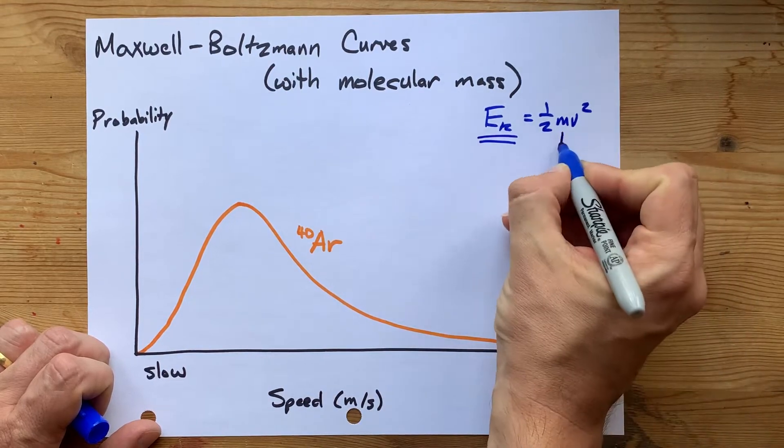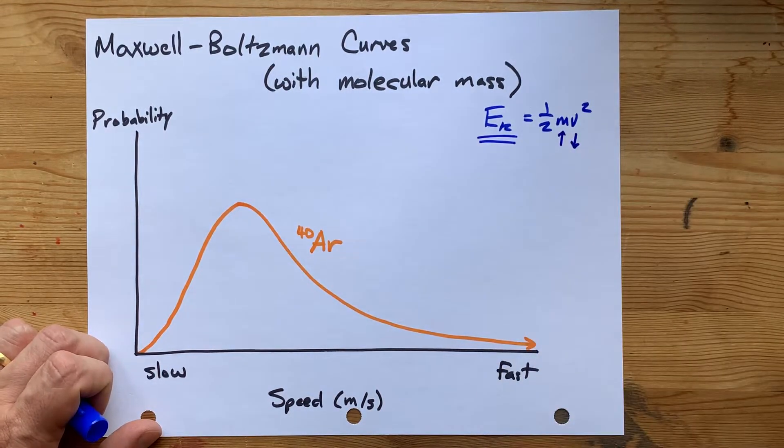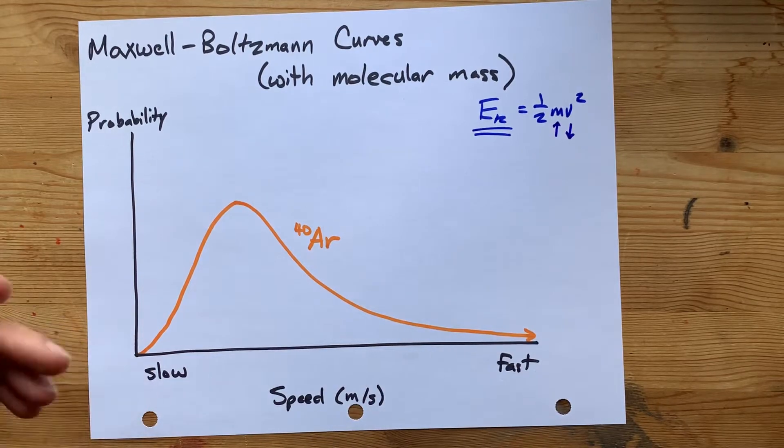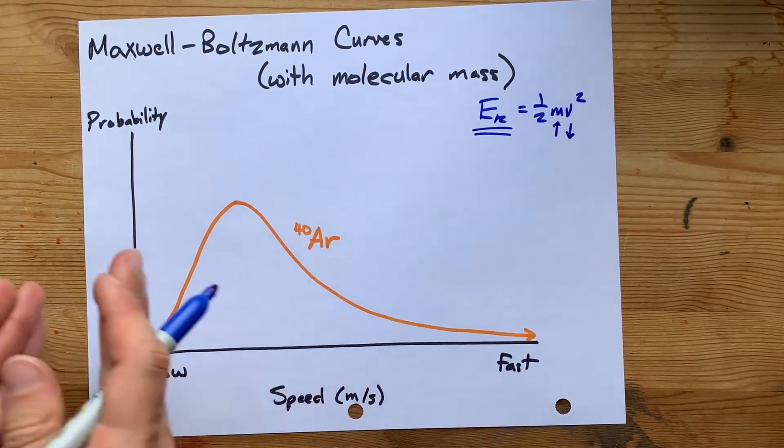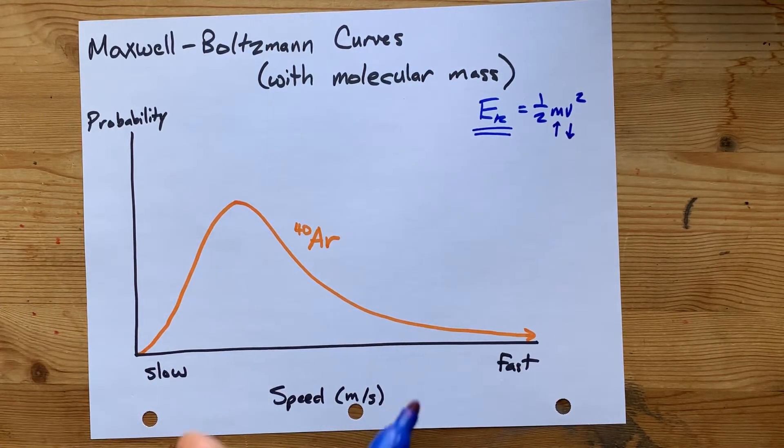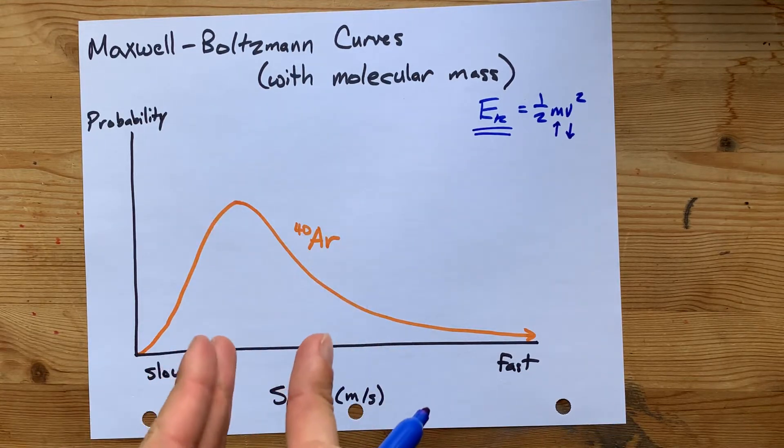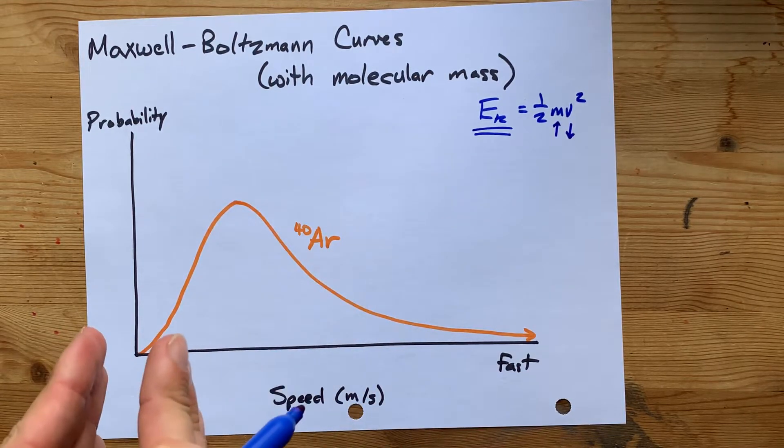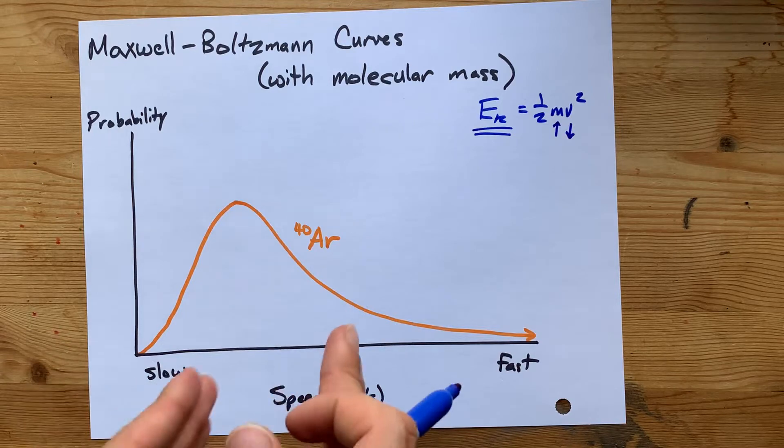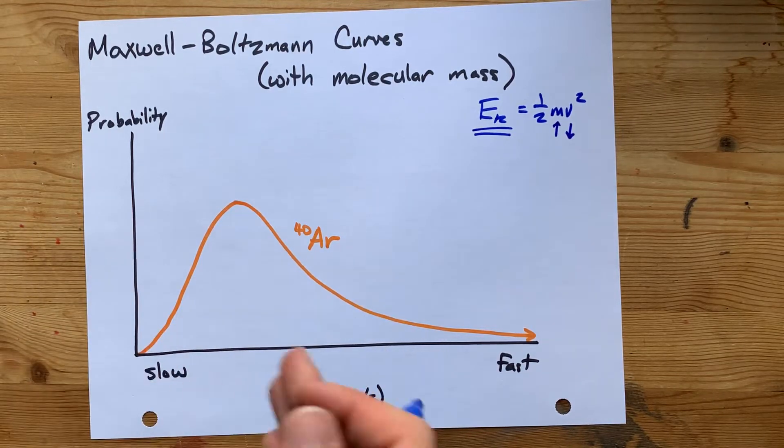And so if m goes up, v has to go down. That's what we're going to get at here. So a heavier particle will have a lower average speed. The peak of the Maxwell-Boltzmann distribution has to move left in order for the average speed to be slower.